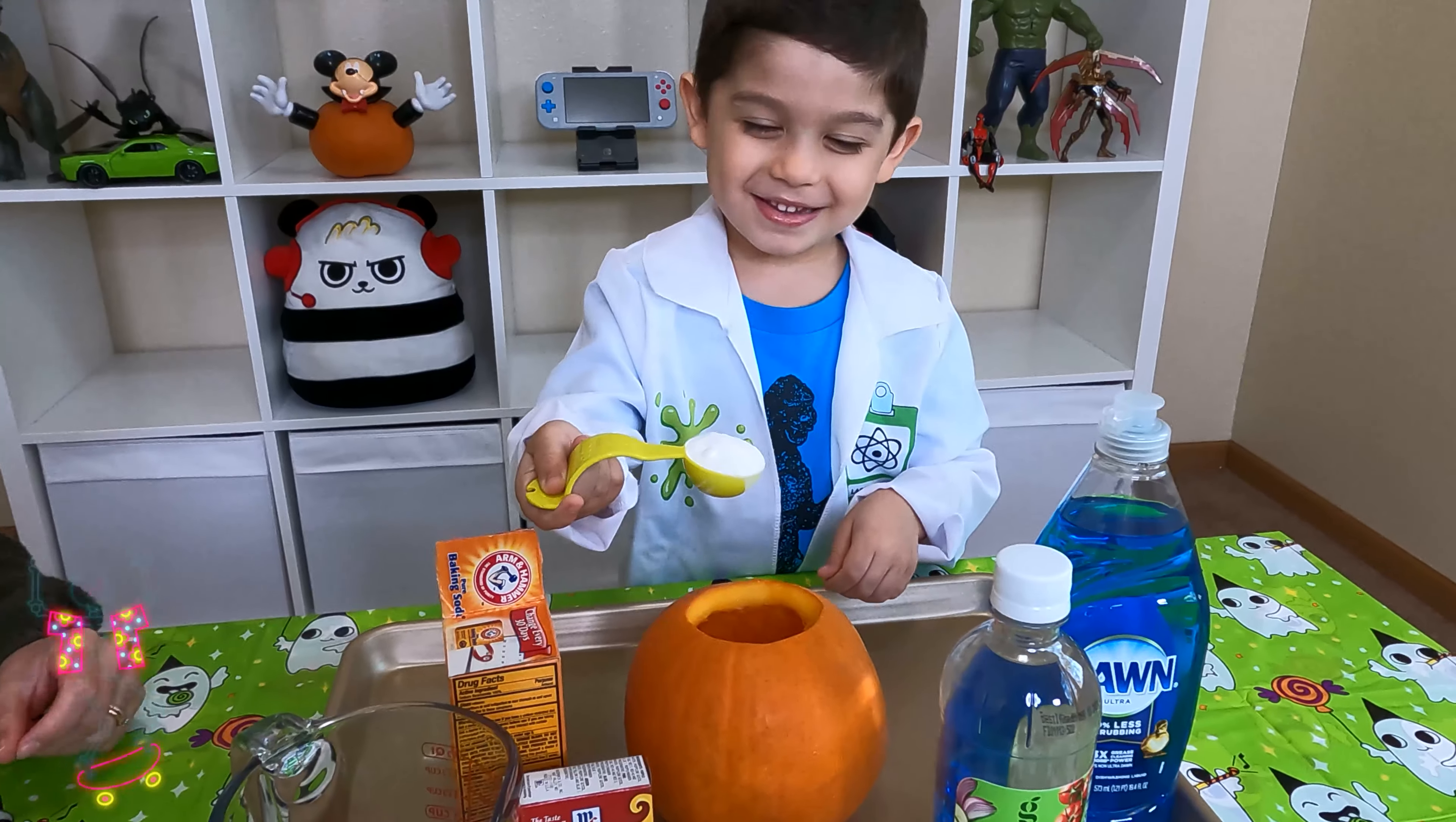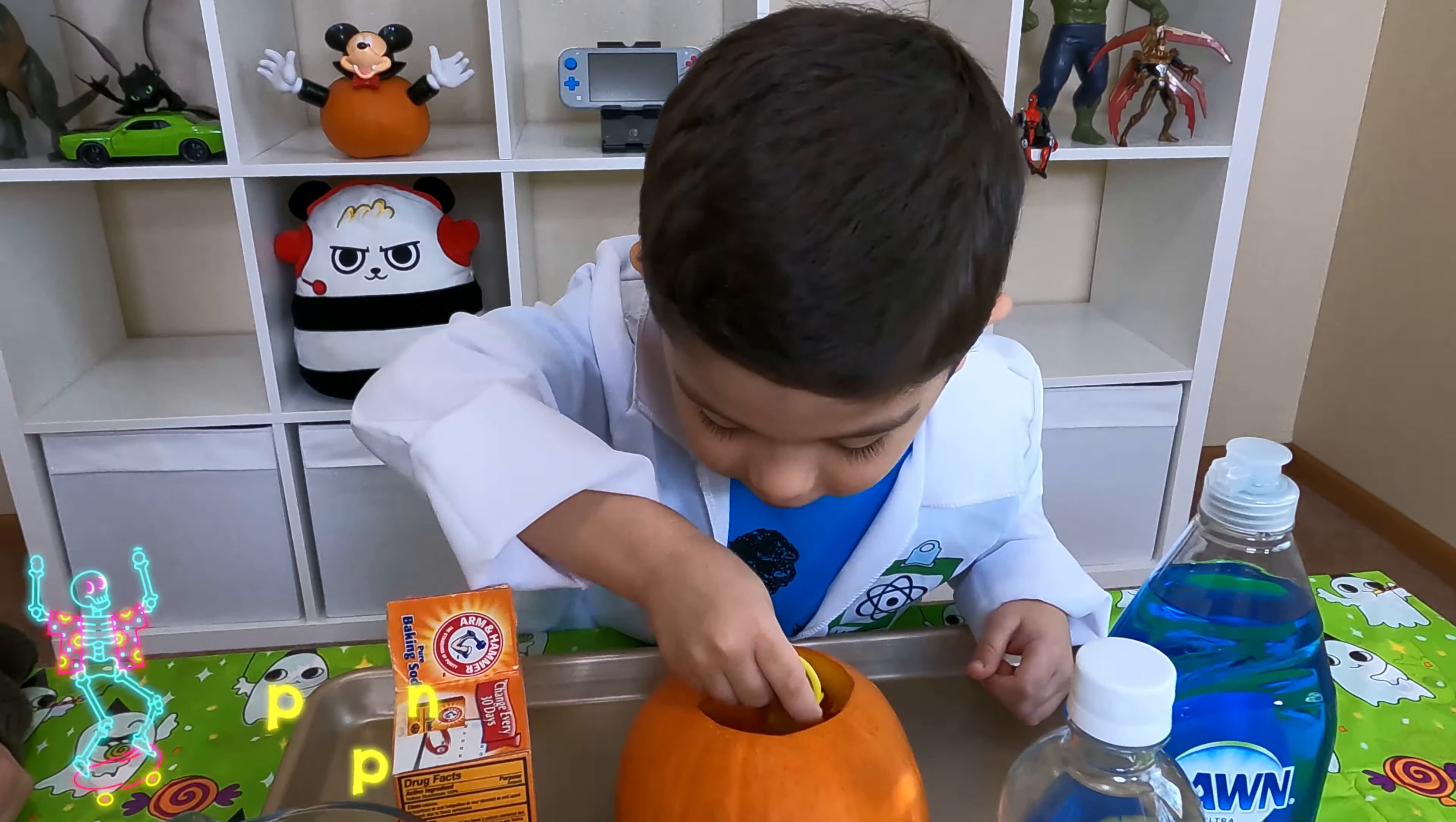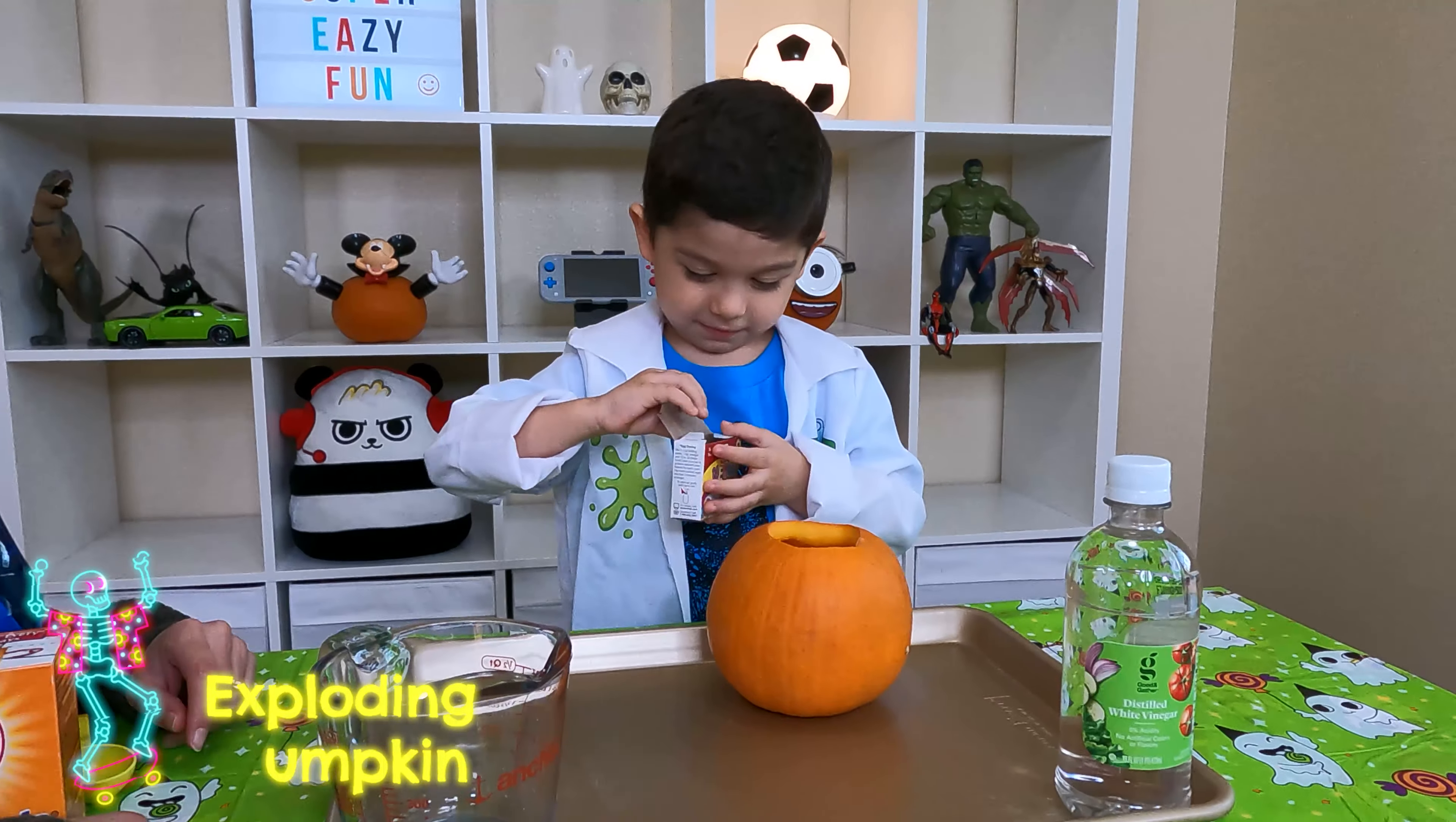Alright, we got everything we need. First things first, you're gonna put one tablespoon of baking soda inside the pumpkin. One, two, three! Yeah! That's a lot of baking soda. Next step, we have to put one squirt of this soap in there.